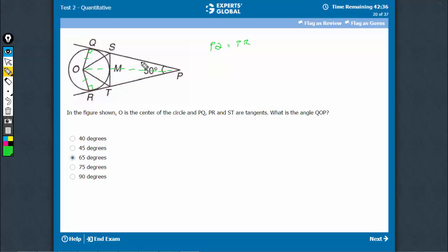If they are congruent, this becomes 25, this becomes 25. So, this is 90, this is 25.